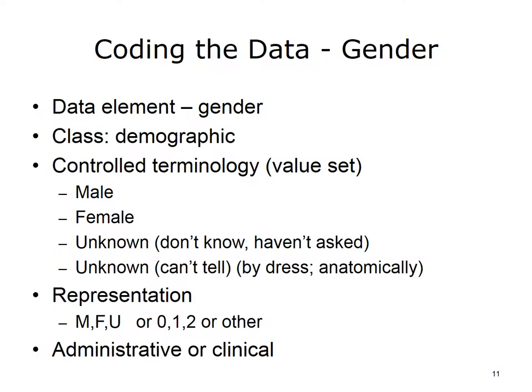Let's take a look at a specific data element — gender — and see how complicated even a simple data element might be. How many values might the answer to this question have? What is administrative gender? What happens if we are talking about clinical gender? How do we distinguish gender if we are talking about X and Y chromosomes? What if we can't determine gender? Note the distinction in the two unknowns — which does 'just unknown' mean? An obvious answer to the gender question might be two: male and female. But from a clinical perspective, some terminologies have as many as 27 different values for this term. Several terminologies break gender into two terms: administrative gender and clinical gender. How do we represent the values? Classically, we have used letters, names, and numbers as possible values among the different users.